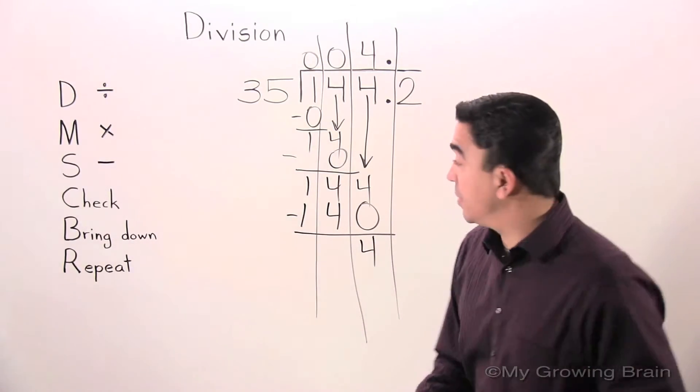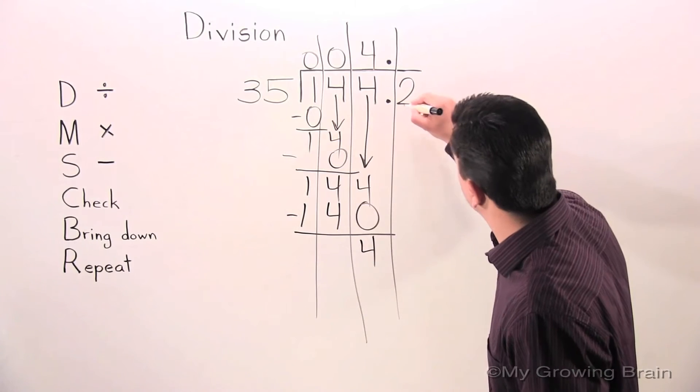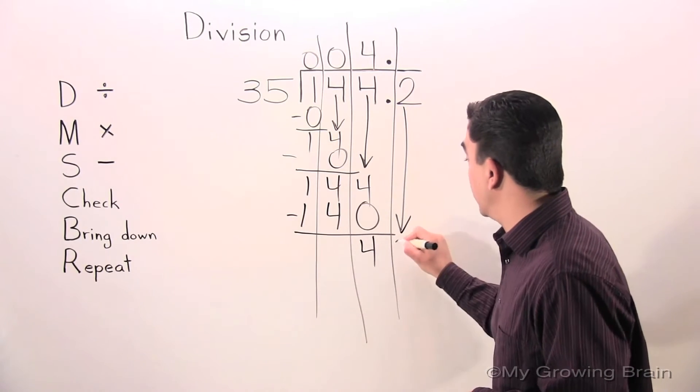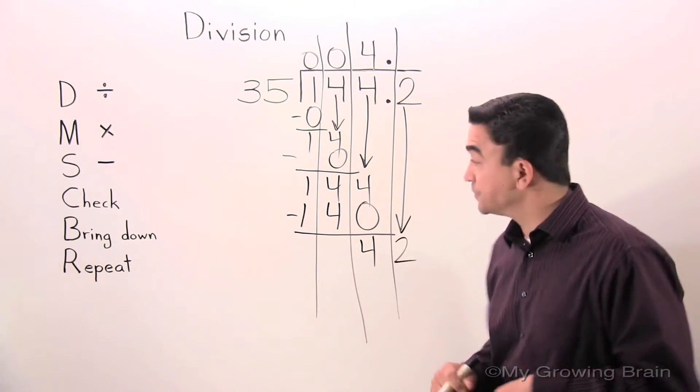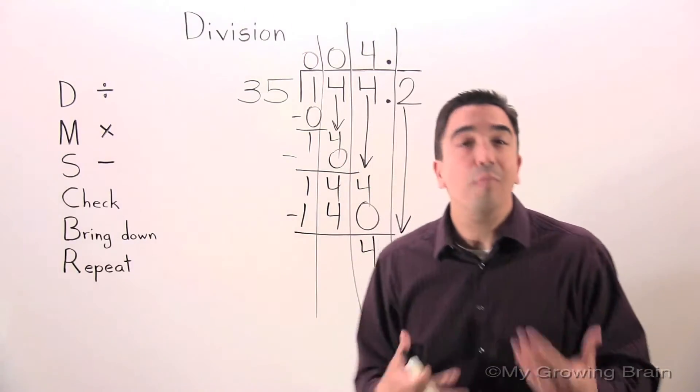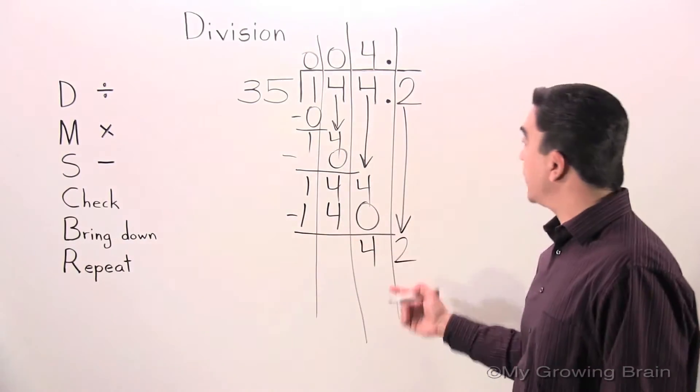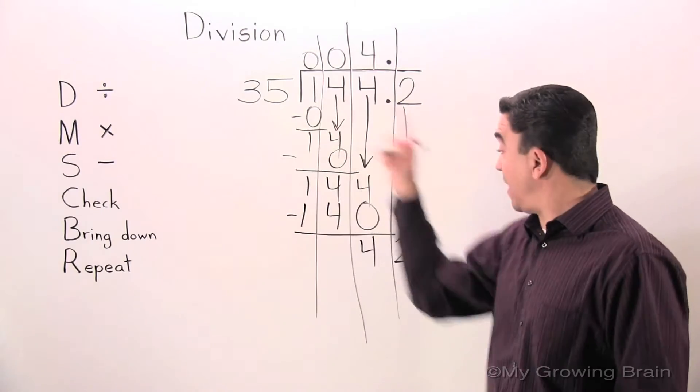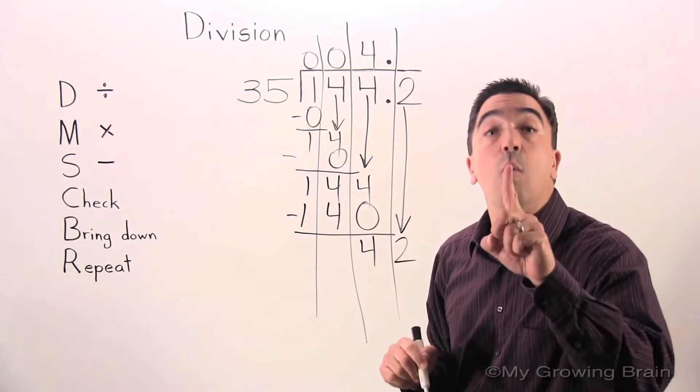Next step: bring down. Bring down the 2. Next step: repeat. Repeat the whole process. Back to the top: 42 divided by 35, or 35 into 42. 1.